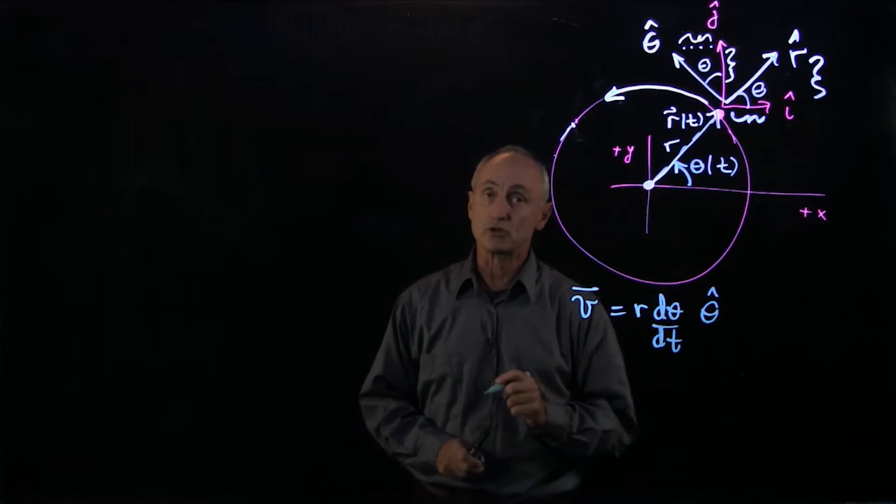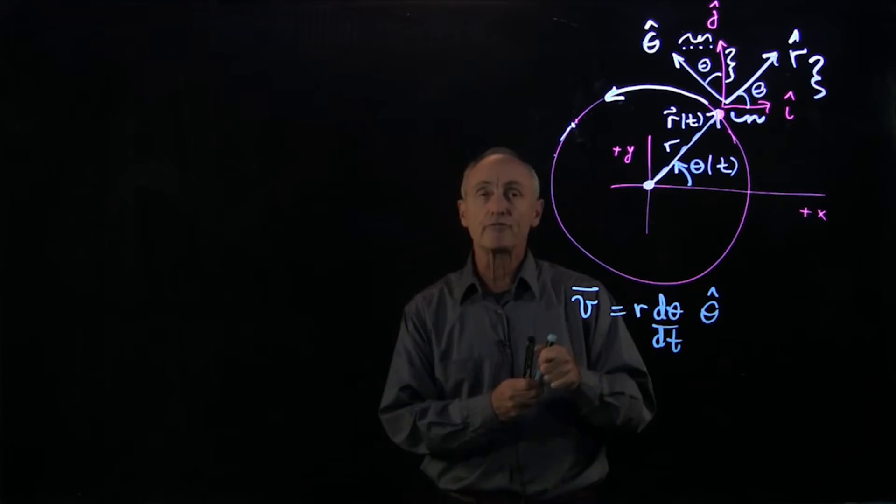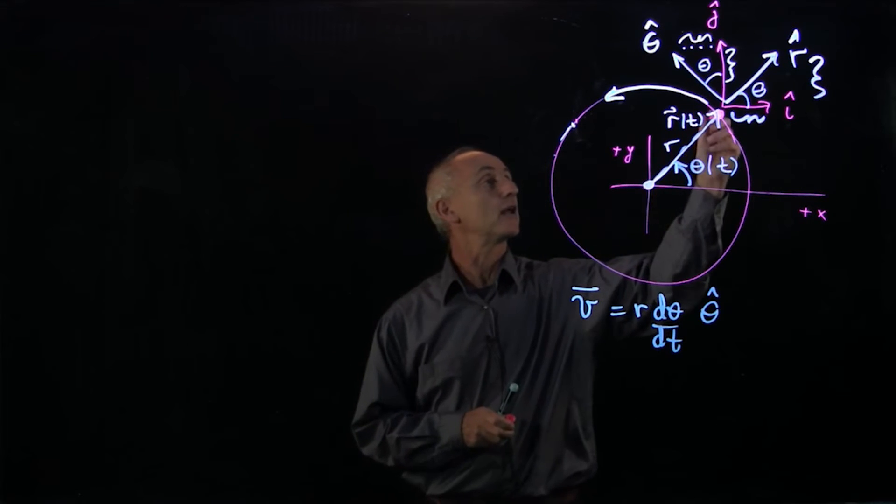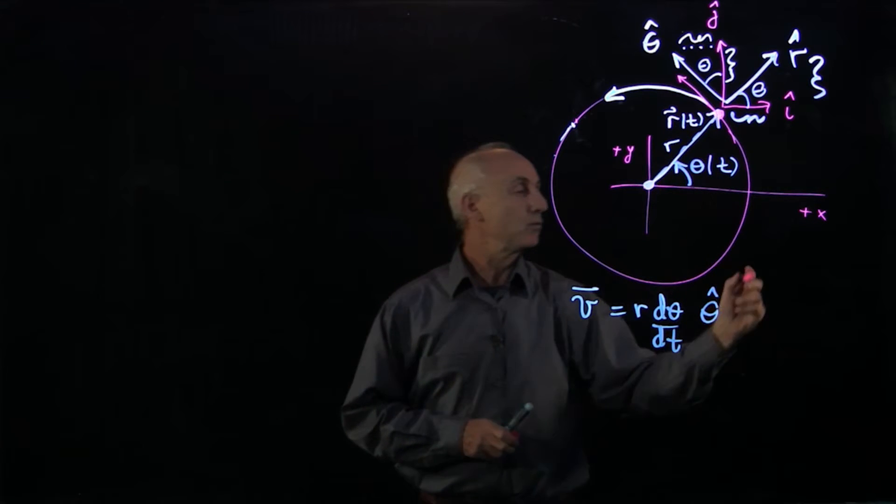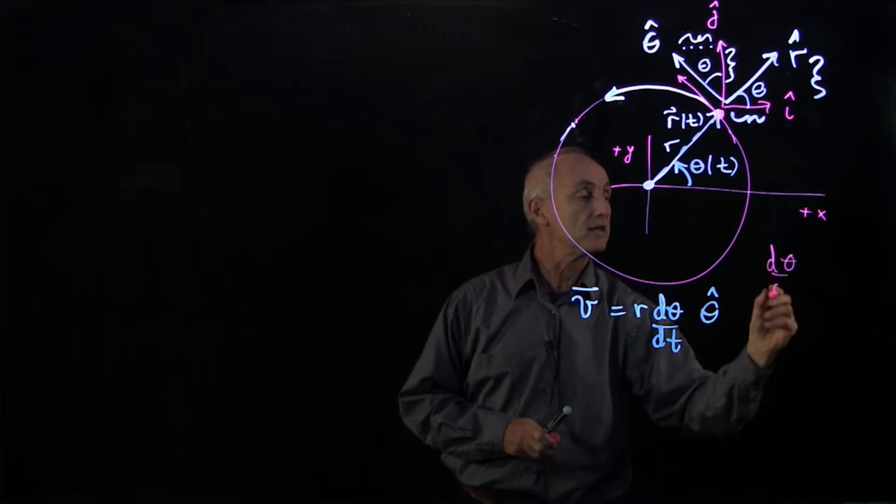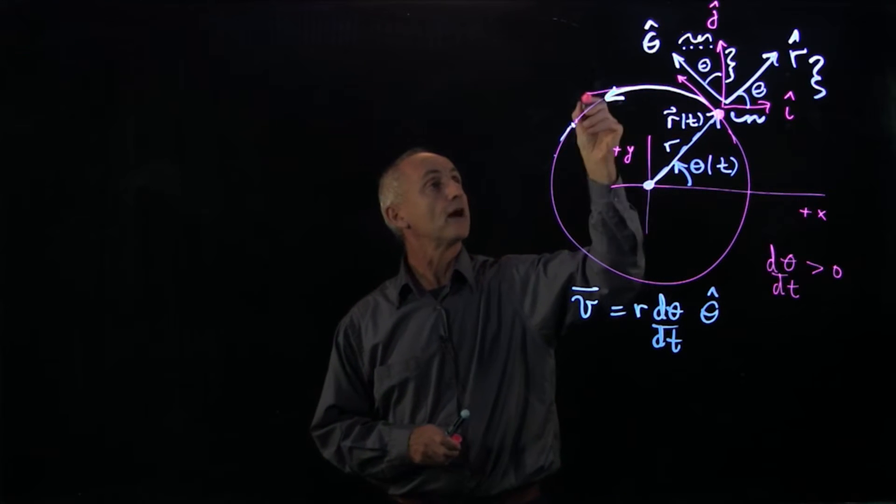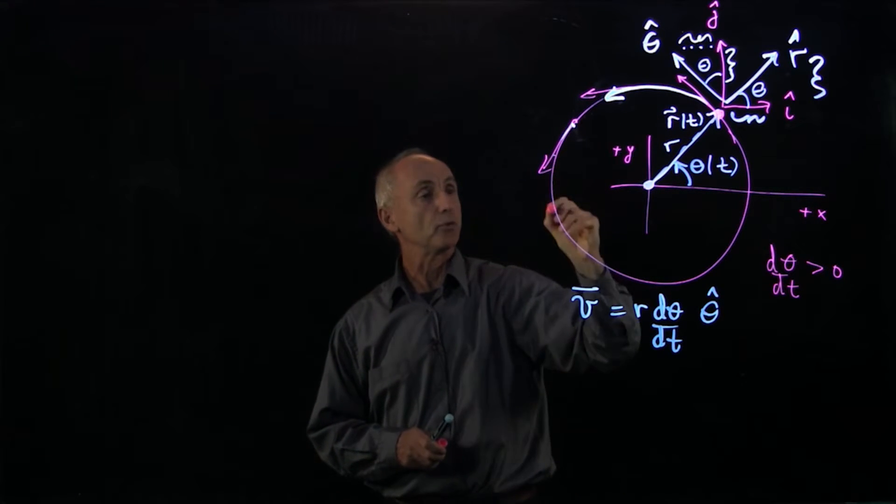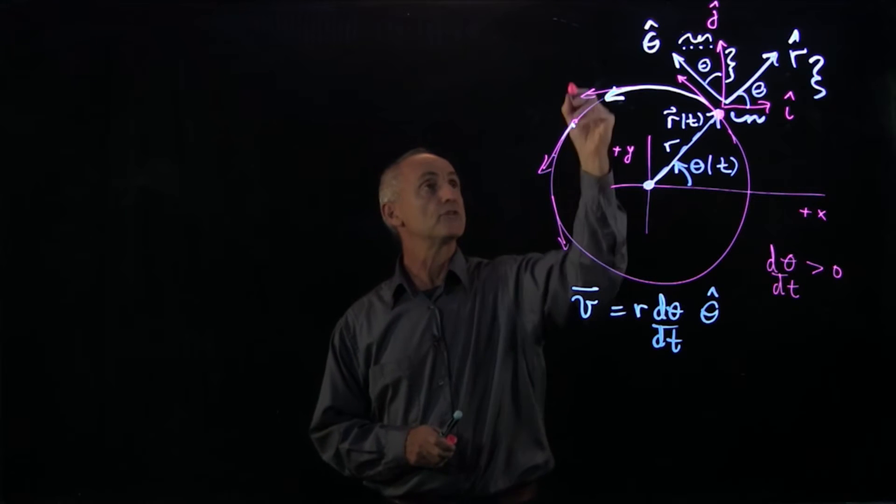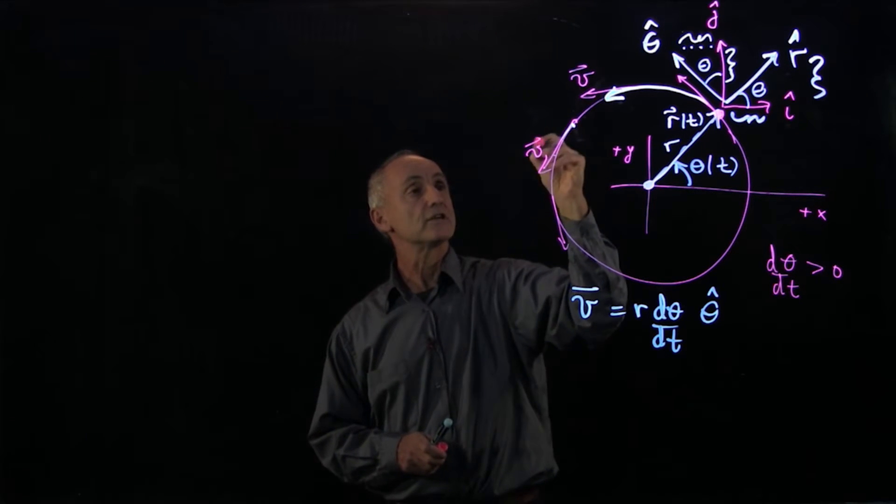And it points tangential to the circle. So let's draw a few characteristic arrows to show that. At this point, we'll draw these pictures with d theta dt positive. So the velocity points like that, it points like this, points like that. And these are all the velocity vectors at different times.